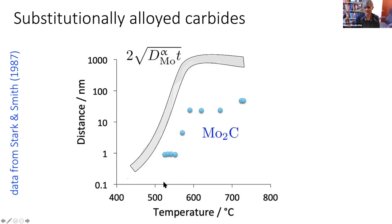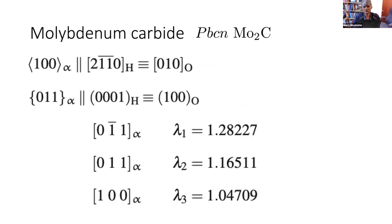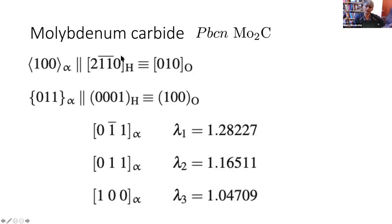Substitutional atom diffusion can be ruled out below approximately this temperature range in typical heat treatments. Calculations using an orientation relationship from the literature and a correspondence matrix show there is absolutely no invariant line for molybdenum carbide, and the distortions are really huge especially along two vectors. The reason I show both hexagonal and orthorhombic is that slightly different compositions of molybdenum carbide give orthorhombic rather than hexagonal structure, but these two are fairly similar.